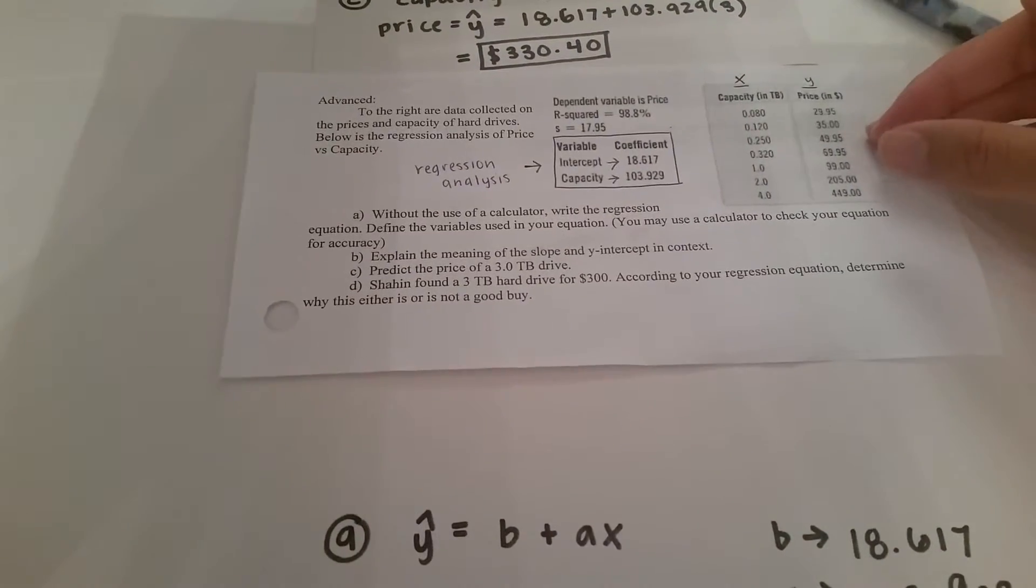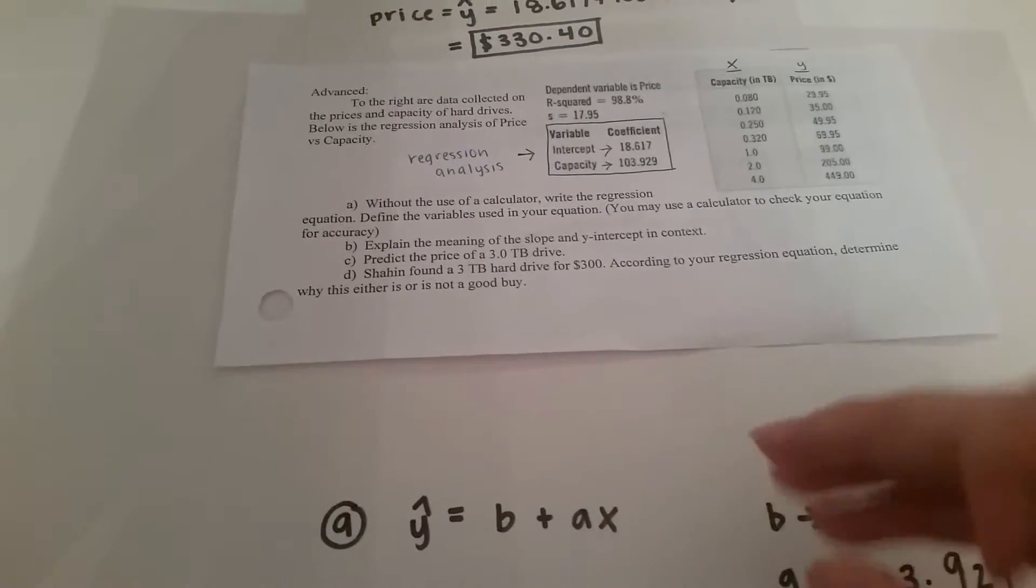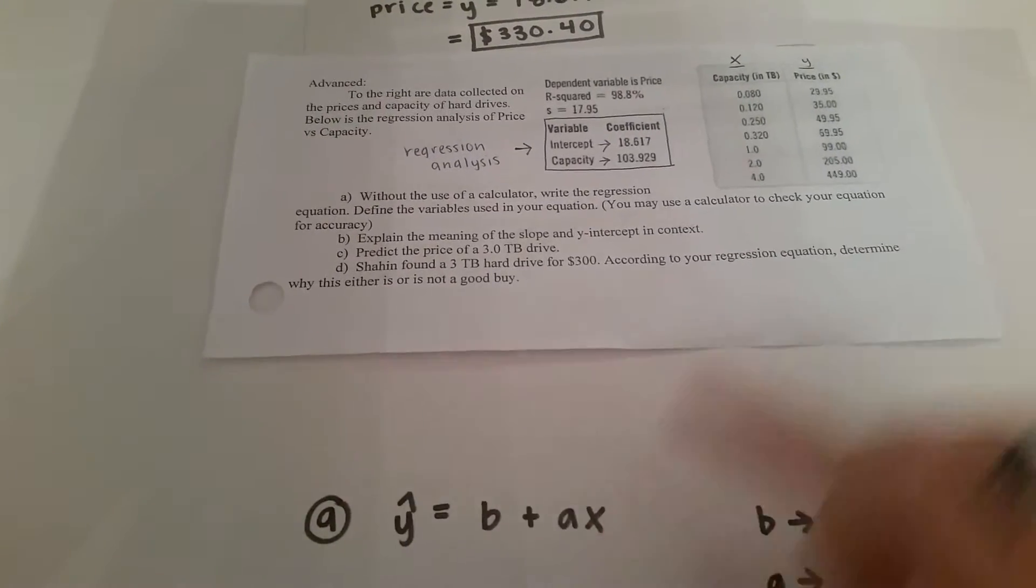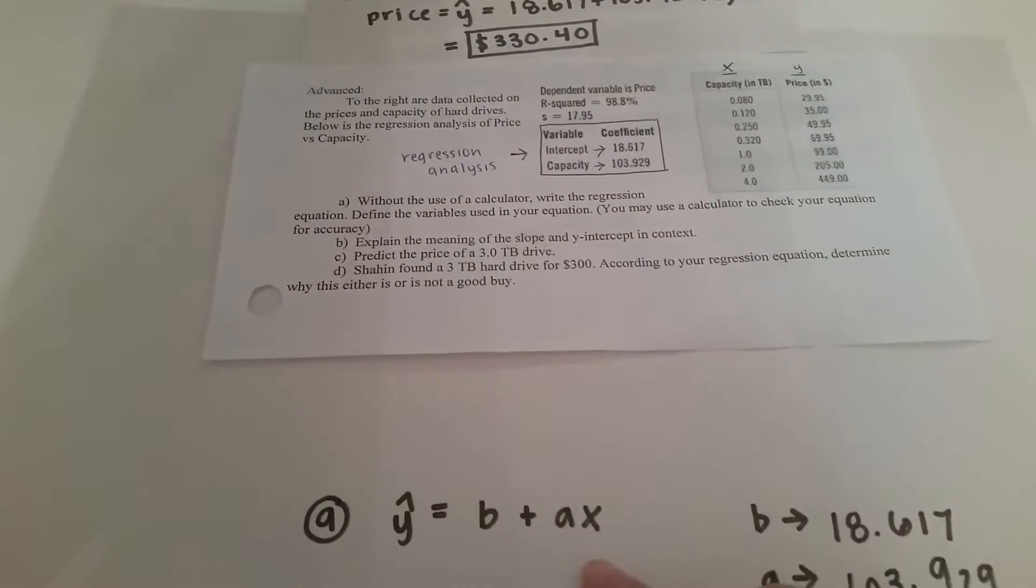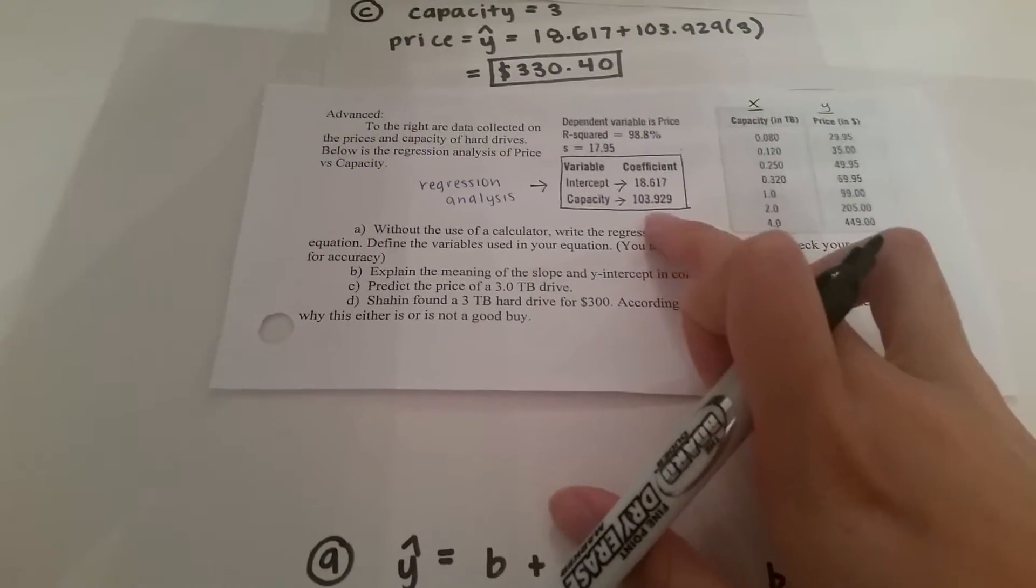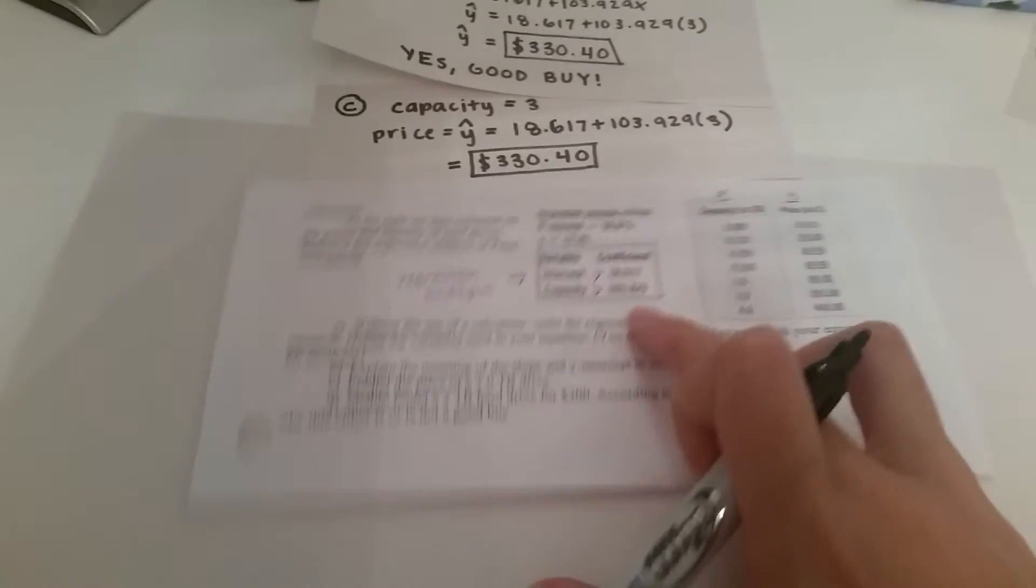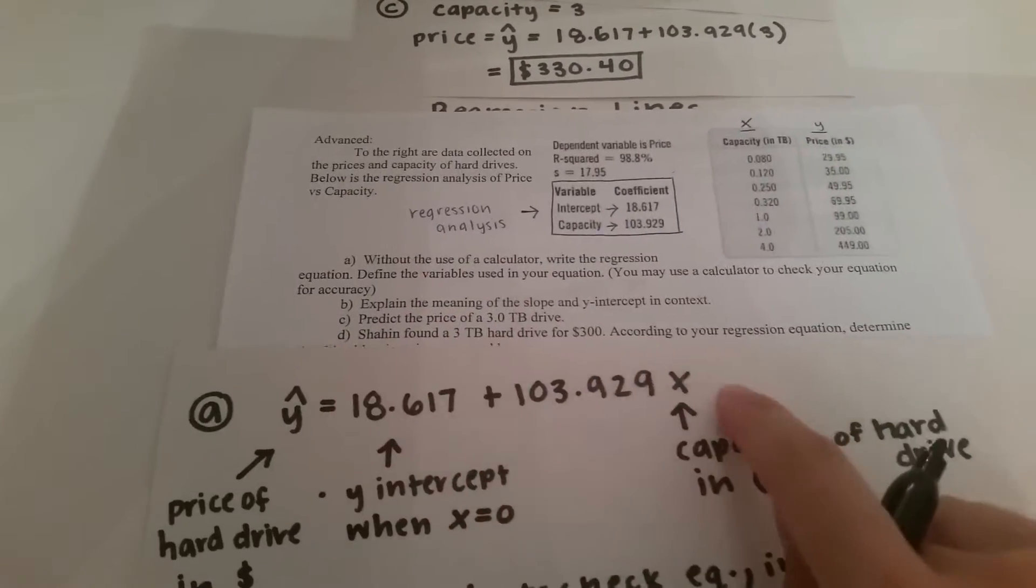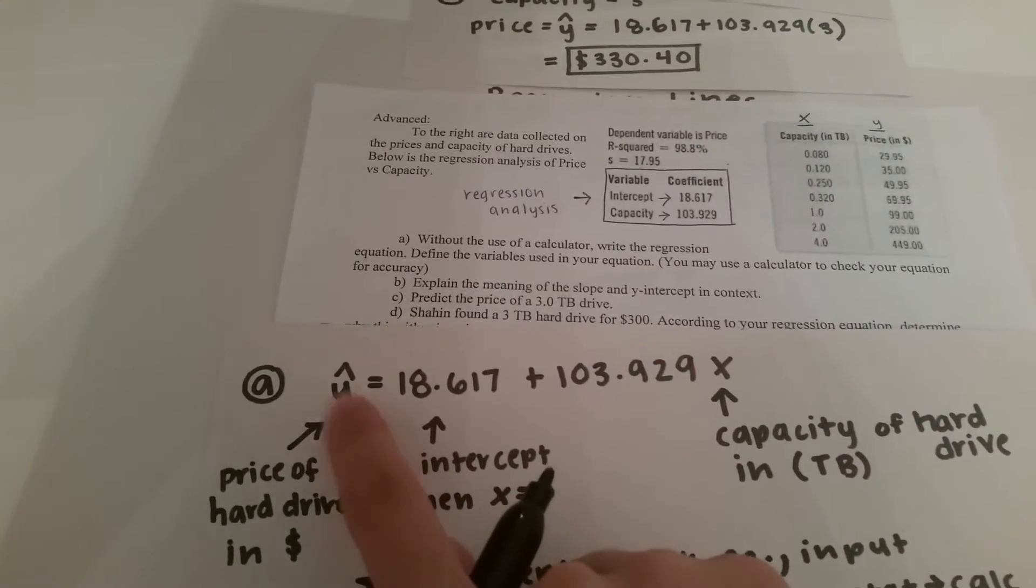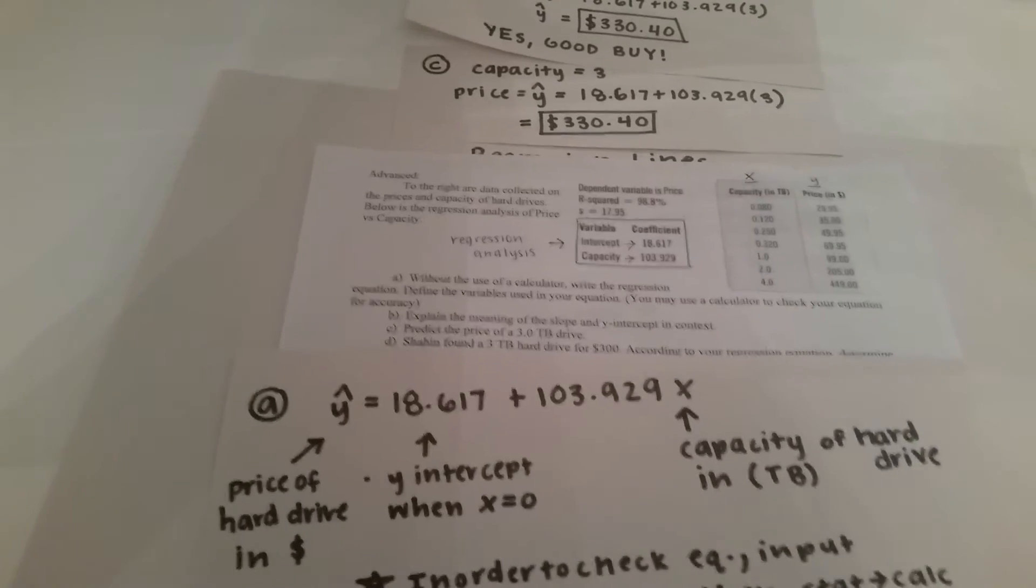And then the intercept value is when your x value is zero so it starts out with 18.617 in this particular example. Now the slope is that for every increment of 1 TB capacity the price will increase by 103.929 dollars. Once you get the equation you're able to plug in any x value to get a predicted value and that concludes the video for today. Thank you for watching.